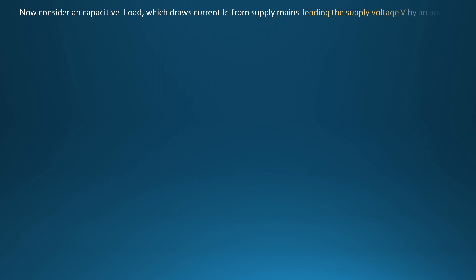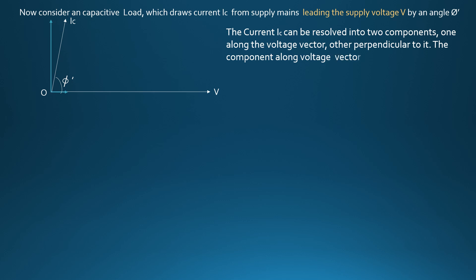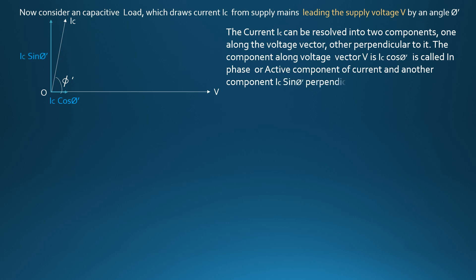Now consider a capacitive load which draws current IC from the supply, leading the supply voltage V by an angle phi dash. The current IC can be resolved into two components: one along the voltage vector, and the other perpendicular to it. The component along voltage vector V — IC cos phi dash — is called the in-phase or active component of current. The other component, IC sin phi dash, perpendicular to voltage vector V, is called the out-of-phase or reactive VAR component of current.